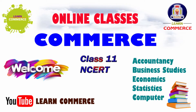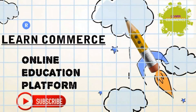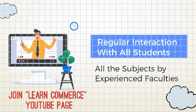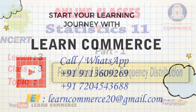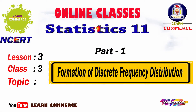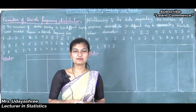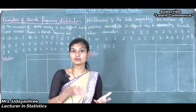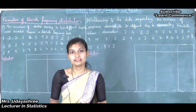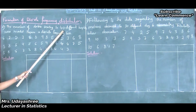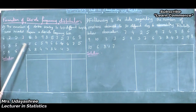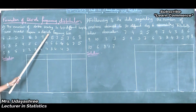Welcome to LearnCommerce PU Online Classes. In the previous class, we discussed how to formulate discrete frequency distribution and how to solve problems using that formation. Now let's see the second problem: the number of doctors serving in 40 different hospitals were recorded. We need to prepare a discrete frequency distribution. Here some observations are given, so I will apply discrete frequency distribution.